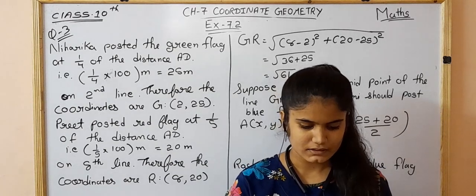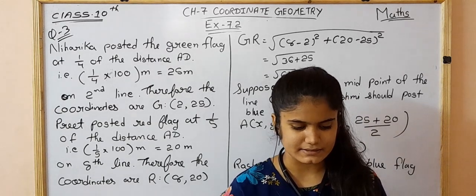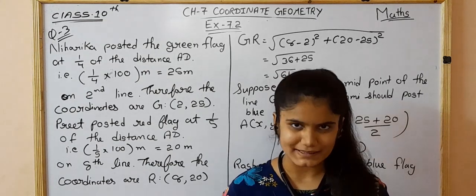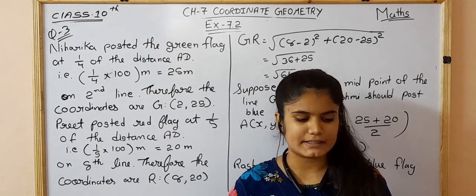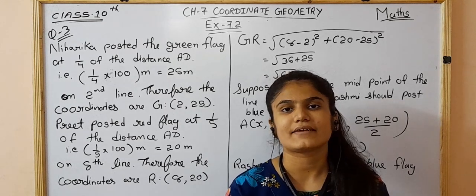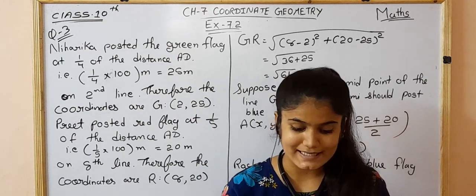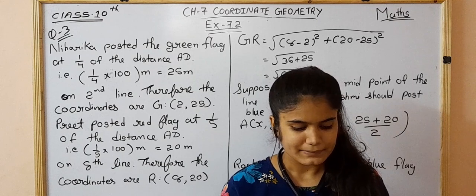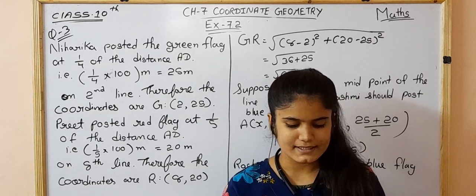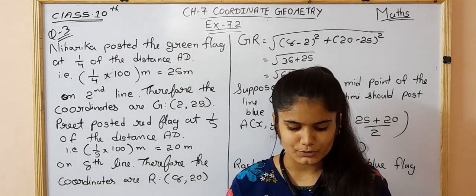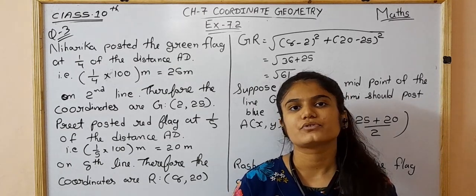Question 3: To conduct sports day activities in a rectangular school ground ABCD, lines have been drawn with chalk powder at a distance of 1 meter each. 100 flower pots have been placed at a distance of 1 meter from each other along AD. Niharika runs 1/4 of the distance AD on the second line and posts a green flag. Preet runs 1/5 of the distance AD on the 9th line and posts a red flag. What is the distance between both flags? If Rashmi has to post a blue flag exactly halfway between the two flags, where should she post it?